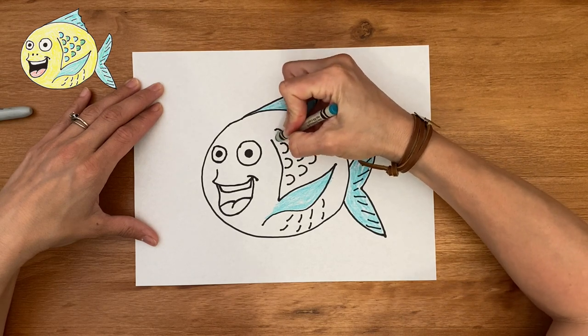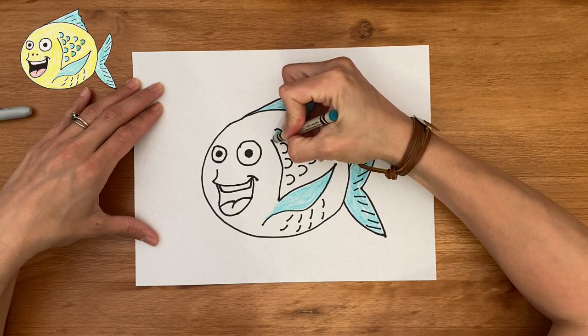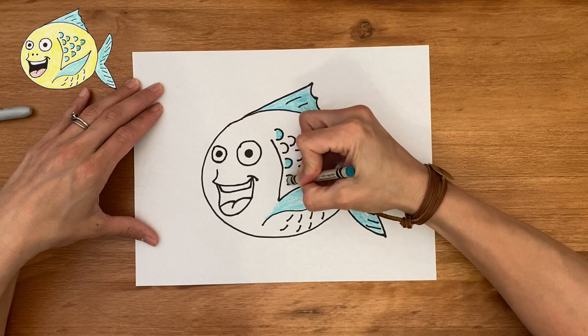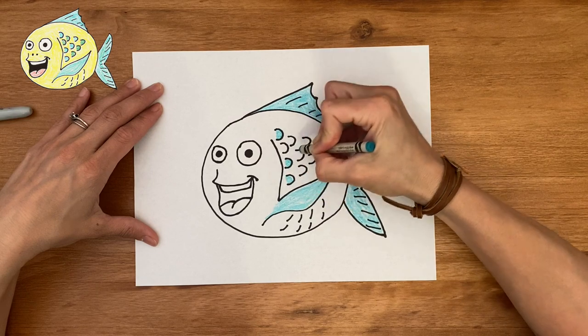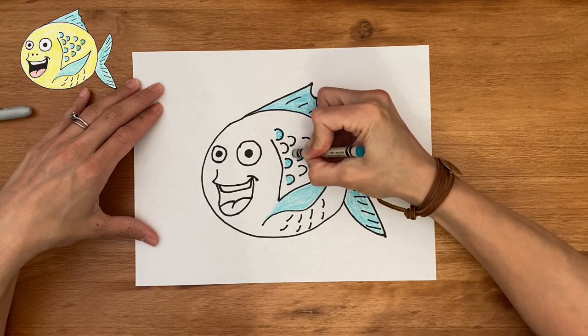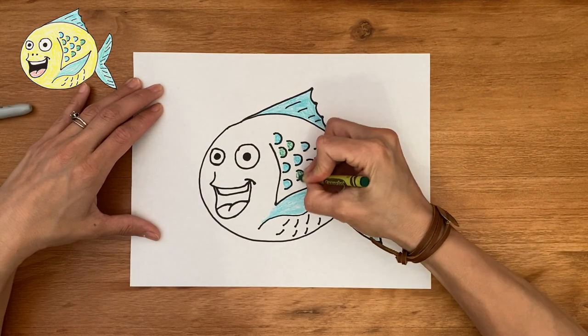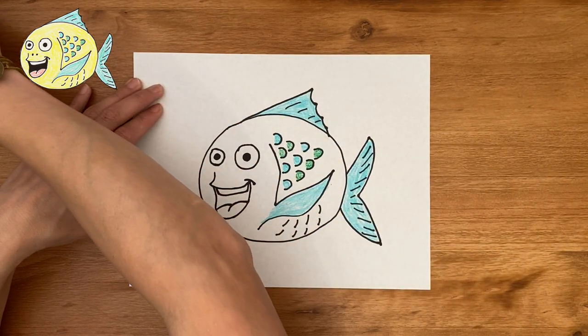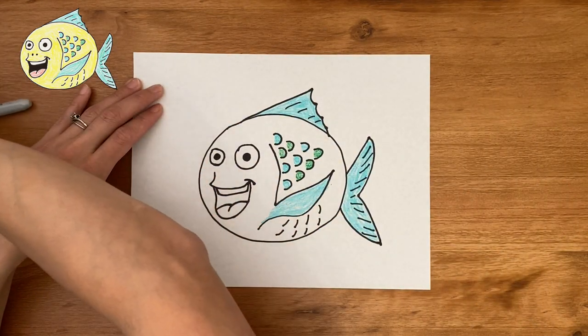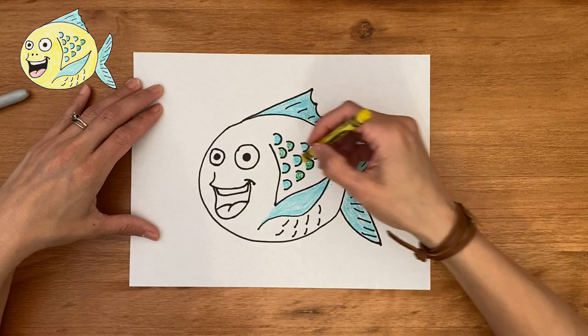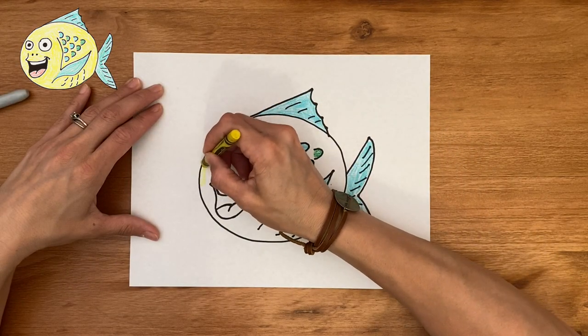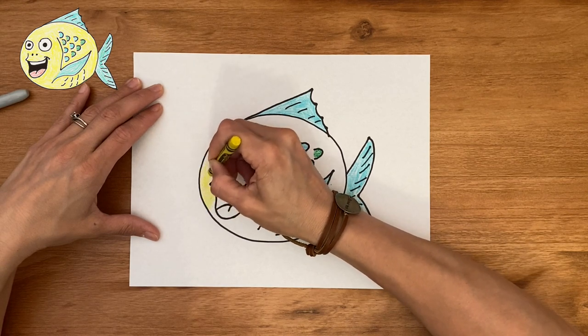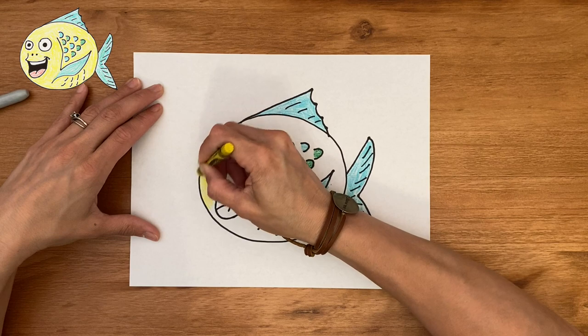All right. Let's color in some of these scales. I'm going to use blue and I'll probably add some green to these as well. All right. Let's start coloring in that body of the fish. I'm going to grab a yellow and just start coloring here. I feel like he's going to look a little like flounder from the little mermaid. I love flounder.